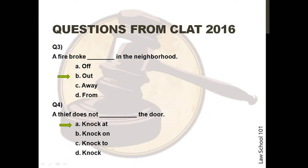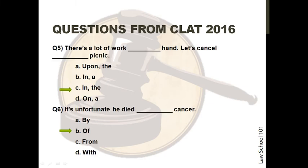Question 3: 'A fire broke ___ in the neighborhood.' This one is very straightforward. The answer is option B, 'out'. Question 4: 'A thief does not ___ the door.' This is another simple question. The answer is option A. Question 5: 'There is a lot of work ___ hand, let's cancel ___ picnic.' The correct answer is C. Make sure your double blanks allow the text to make sense together. If you figure out one blank, you can use it to eliminate the other options. The second blank is definitely 'the', leaving options A and C. However, 'upon hand' does not make sense, so option A is eliminated. We are left with option C, which is the correct answer. Question 6: 'It's unfortunate he died ___ cancer.' This is a simple question. The correct answer is B.